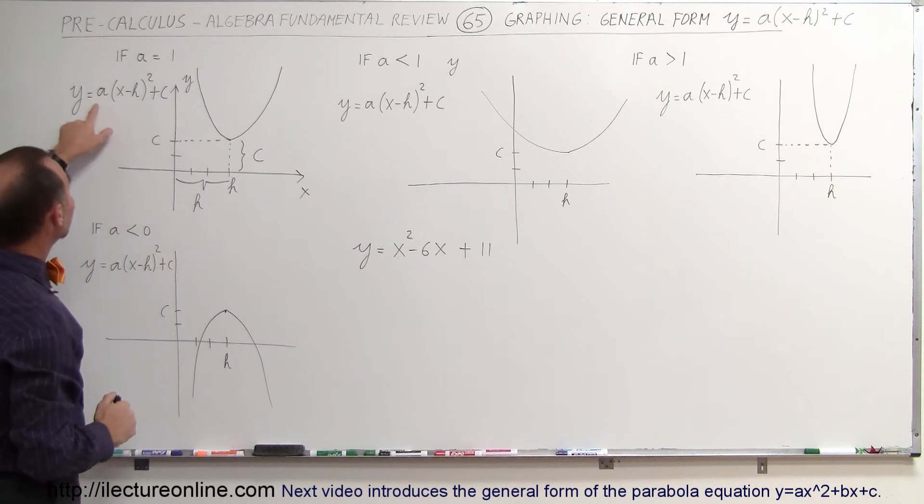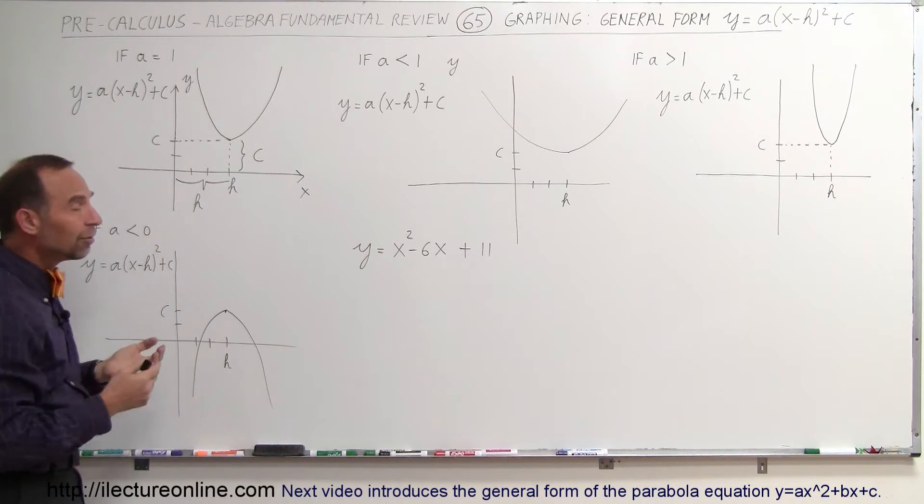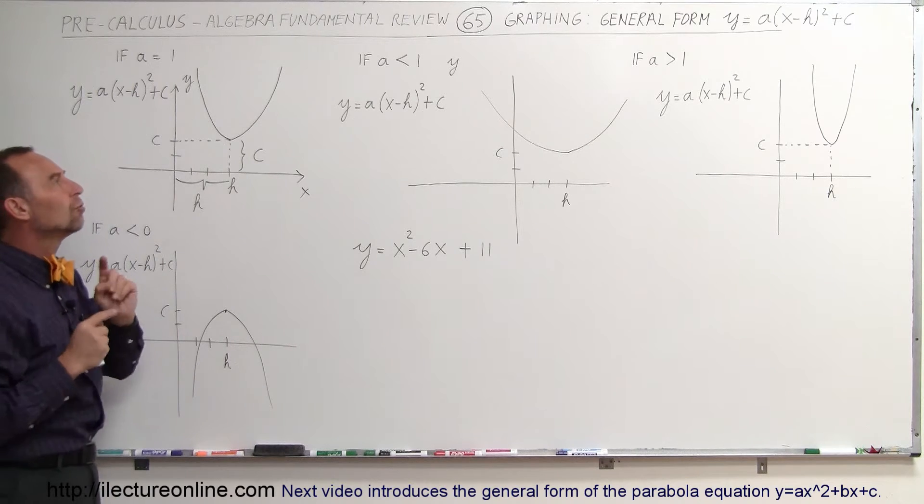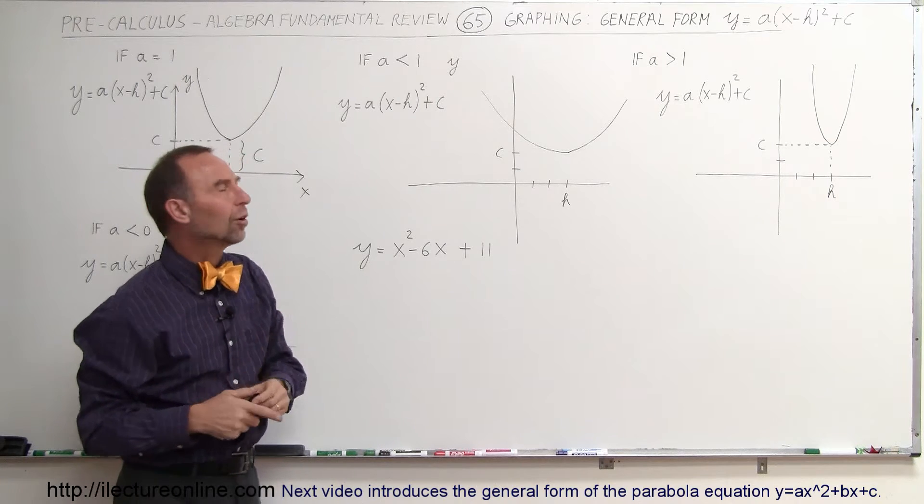Now, that's considering that a is equal to 1, so we normally wouldn't write a 1 there. But what if a is not 1? What if a is smaller? Let's say what if a is smaller than 1 but still greater than 0?